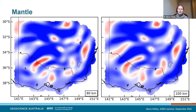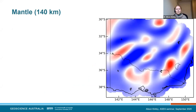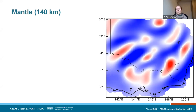Moving from the crust into the mantle, we see quite a change in the model. At a depth slice of 140 kilometres, it's quite a different pattern — moving from curved geometries to more of a northeasterly alignment. This alignment is present in the data as well as in the model. However, we can't resolve for certain whether these are discrete conductors or whether we actually have anisotropic resistivity aligned in the northeast direction. Some of these conductors correlate well with other datasets.